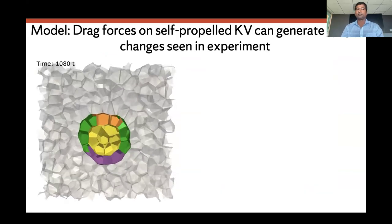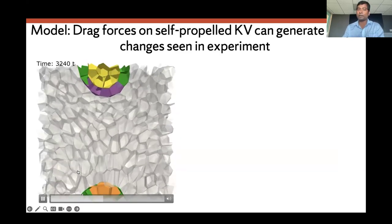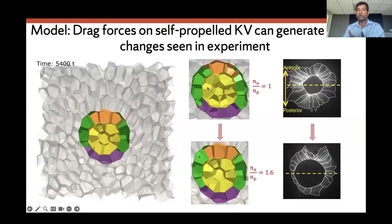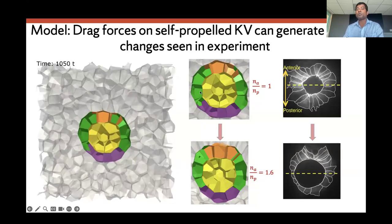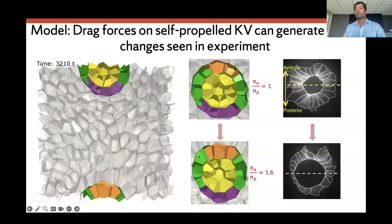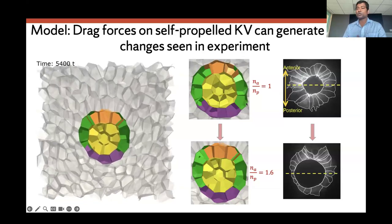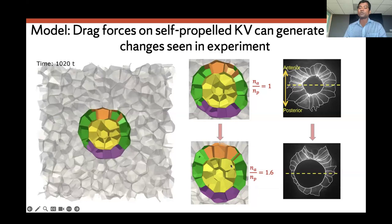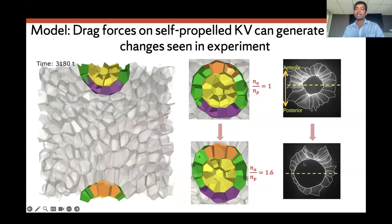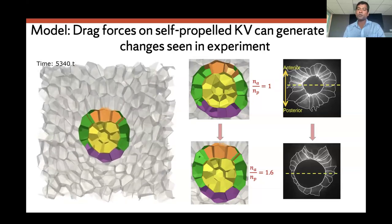We start with equal forces from the top and the bottom and see what happens as the KV moves through the tailbud cells. At equilibrium with no dynamic forces, if you draw a line and count the number of anterior cells versus posterior cells, the ratio is close to one. But as the KV moves through the tailbud cells, this ratio quickly goes to greater than 1.5, which has been seen in experiment. So we can see the same shape changes observed in the control embryo experiment.